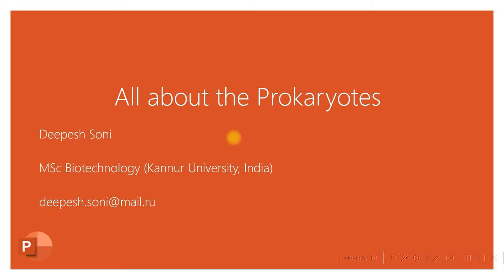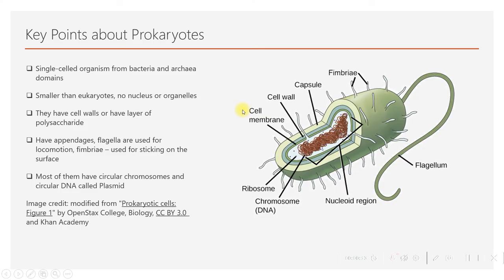Let's begin with the very basics of prokaryotic cells. As you see in the diagram, a prokaryotic cell is a single-cell organism — from archaebacteria to bacteria. They are smaller than eukaryotic cells and have no nucleus and no organelles.